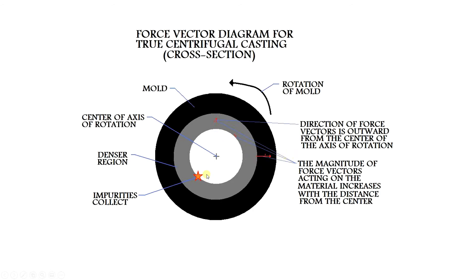Since we take material from another area using a ladle, any impurities or scale formed in the liquid material will be placed toward the inner side. The denser, high-purity material will be pushed to the surface of the mold. So low impurities are on the inside. Before the product goes to market, we can remove that inner layer by machining, laser cutting, etc., and the perfect material goes to market.